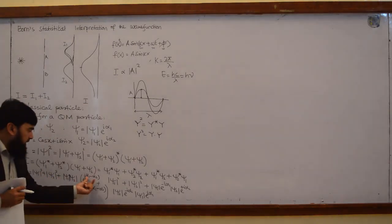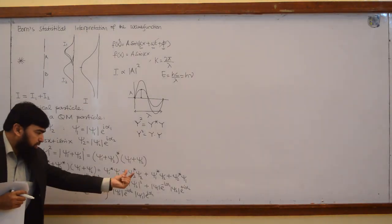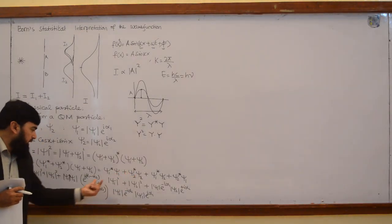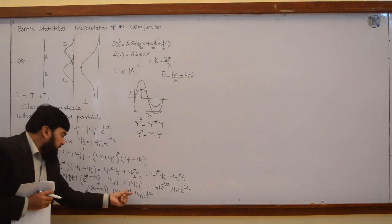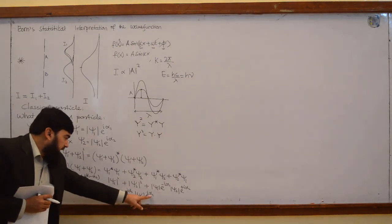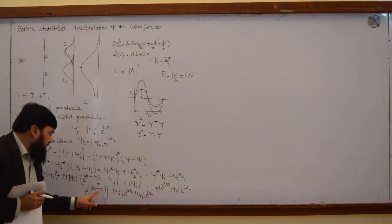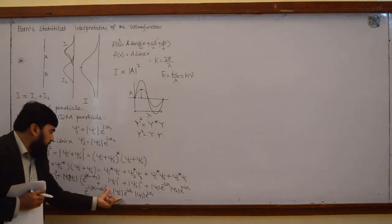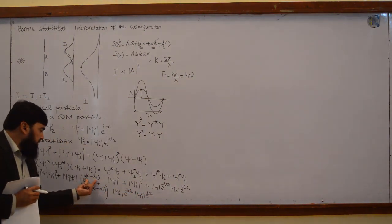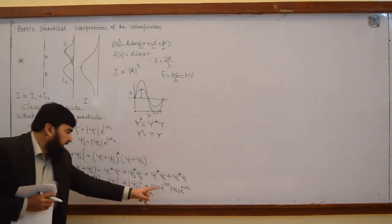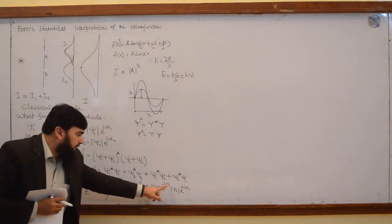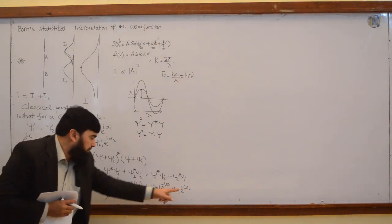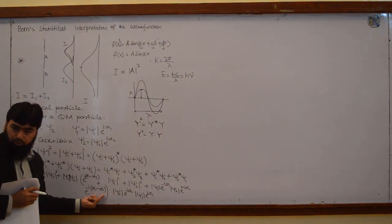Clear? I just combined the earlier one and this one. This one is alpha 1 minus alpha 2, so I wrote it here. The first term — the second term I took minus common, so again alpha 1 minus alpha 2.